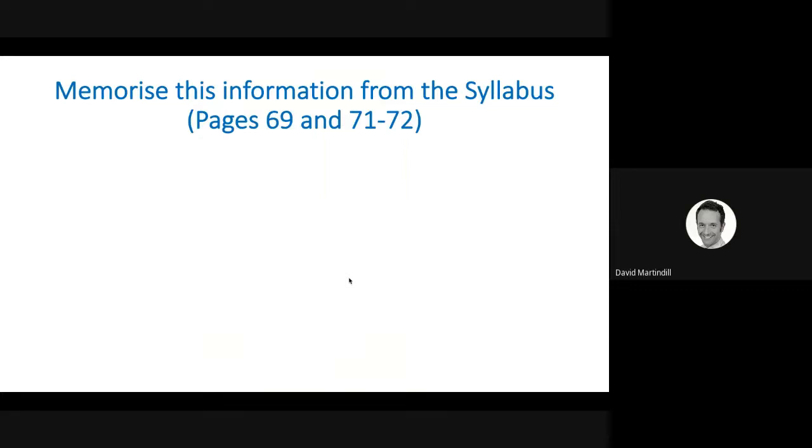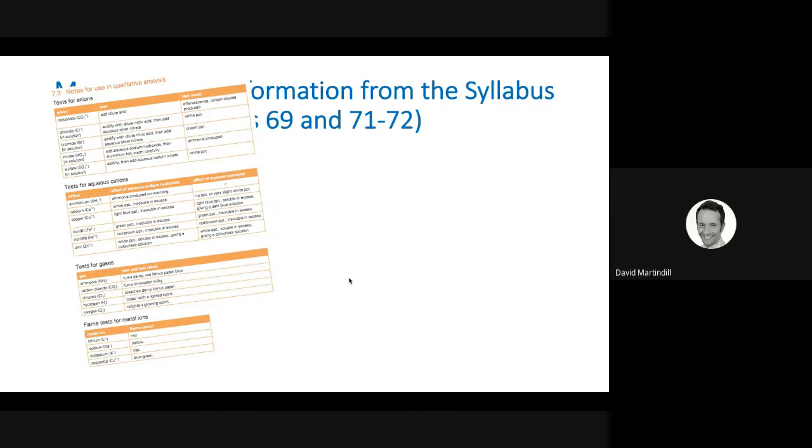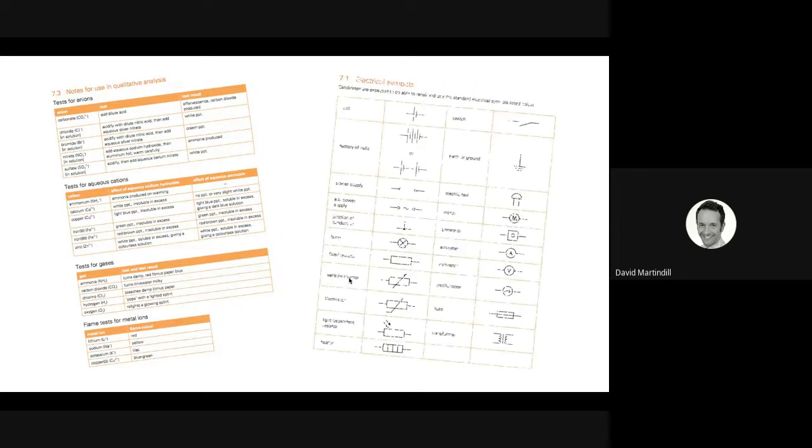In particular, however, have a look at these two pages, pages 69 and between 71 and 72. You will need to learn these before tomorrow, and I mean memorise them. What we have here is the quantitative and qualitative analysis for chemistry and the electrical symbols for physics.